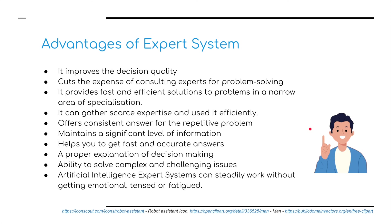The advantages of an expert system: it improves decision quality; it cuts the expense of consulting experts for problem solving; it provides fast and efficient solutions to problems in a narrow area of specialization; it can gather scarce expertise and use it effectively and efficiently; it offers consistent answers for repetitive problems; it maintains a significant level of information; it helps you get fast and accurate answers; it provides a proper explanation of decision making; ability to solve complex and challenging issues; and AI expert systems can work steadily without getting emotional, tense, or fatigued.